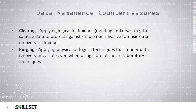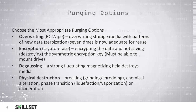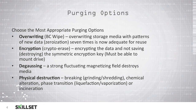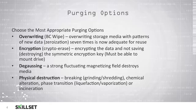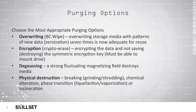Purging is where we apply physical or logical techniques to render data recovery infeasible, even when using state-of-the-art lab techniques. There are a few options you can use for purging depending on the sensitivity of the data that was stored on the device. You can overwrite data using a tool such as BCWipe that simply overwrites all of the areas of the storage media with patterns of data — typically zeros — and that is known as zeroization.